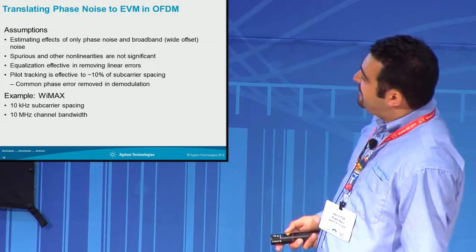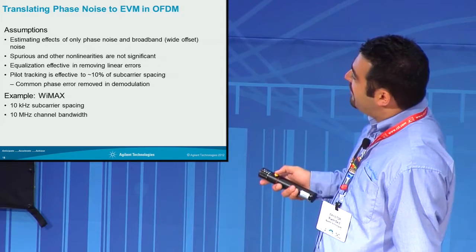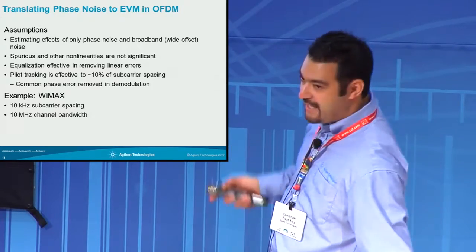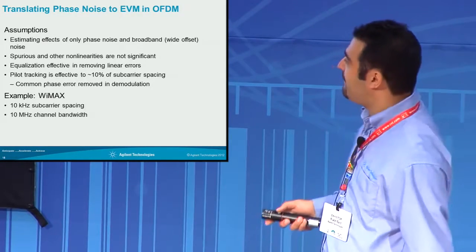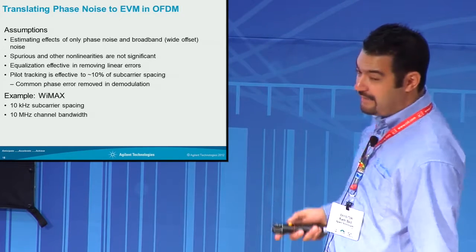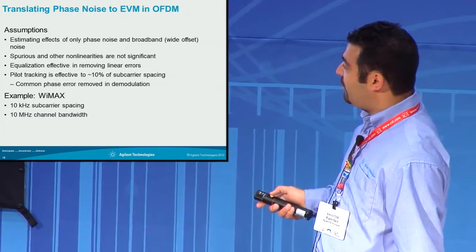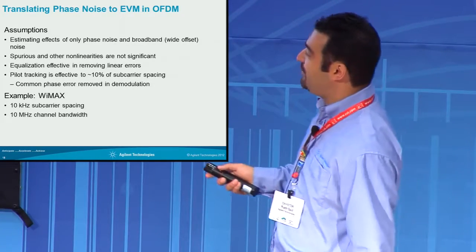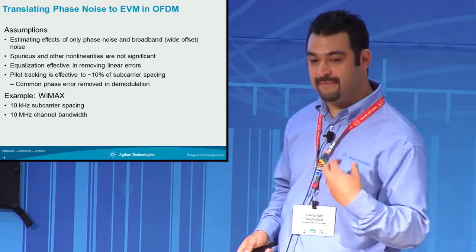We're going to do an example calculation looking at an OFDM signal with the following assumptions: we're going to estimate phase noise effects as they contribute directly to EVM. We're assuming spurious and other non-linear areas are not very significant. We're removing equalization and assuming 10% pilot tracking is removing some phase noise error.